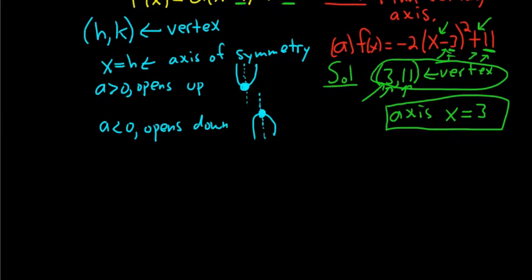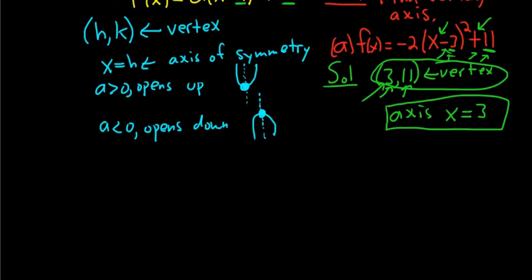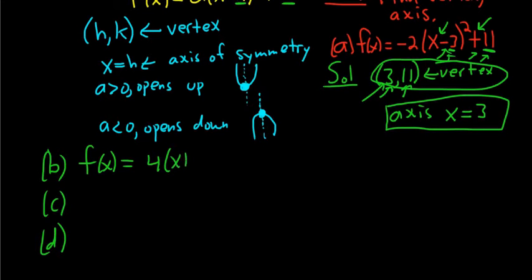Let's do a bunch more of these so you see how it works. Part b: f(x) equals 4 times (x plus 2) squared, minus 12. Part c: f(x) equals negative 3 times (x minus 7) squared, plus 4.